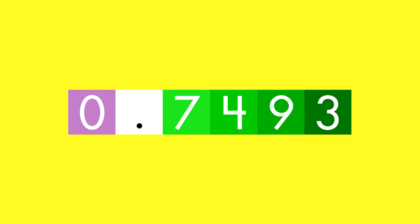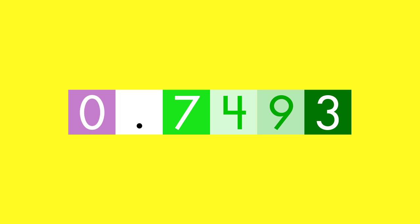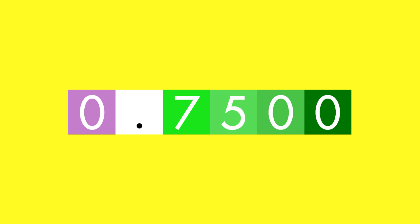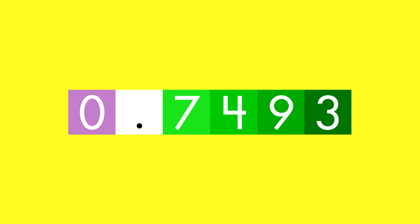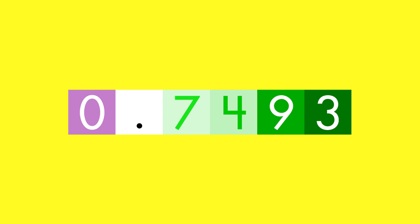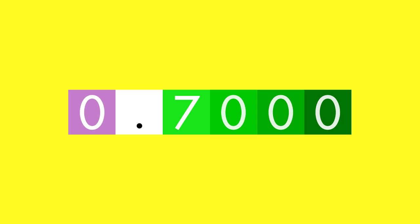To round to the nearest hundredth, look at the digit to the right. Since it is greater than five, round up. To round to the nearest tenth, look at the digit to the right. Since it is less than five, round down.